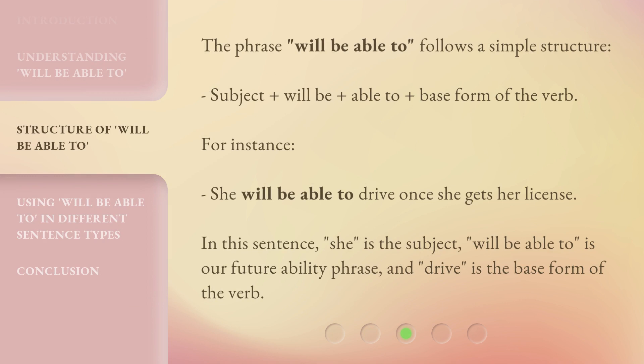The phrase 'will be able to' follows a simple structure: subject + will be + able to + base form of the verb. For instance: 'She will be able to drive once she gets her license.' In this sentence, 'she' is the subject, 'will be able to' is our future ability phrase, and 'drive' is the base form of the verb.